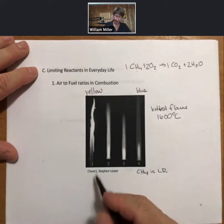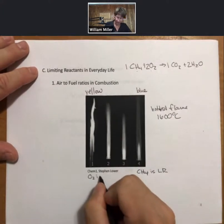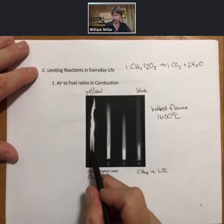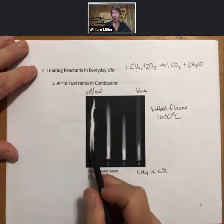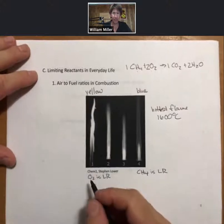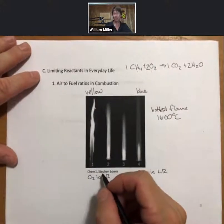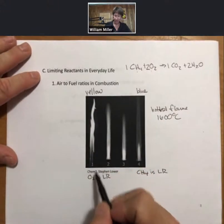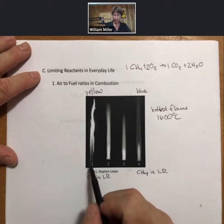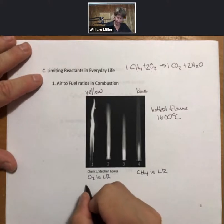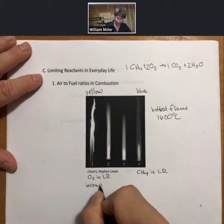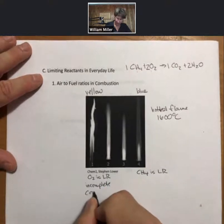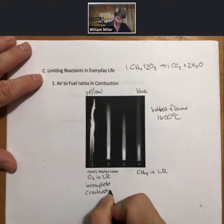Over here, oxygen is the limiting reactant. That means that for a yellow flame, or also typically seen in a campfire flame, when the flames are yellow, the oxygen is limiting. And you have incomplete combustion, incomplete burning.